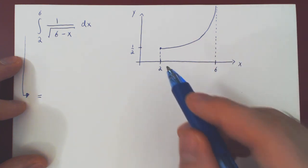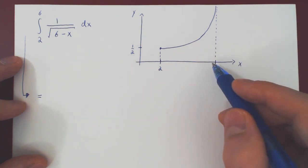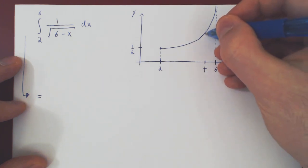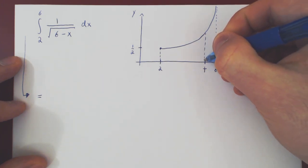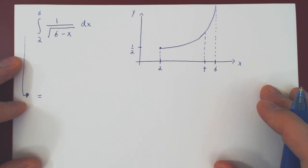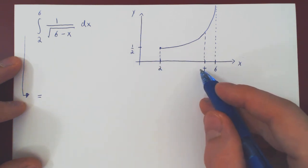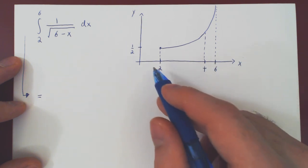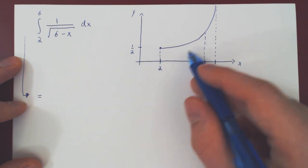The function is continuous everywhere between 2 and 6 except exactly at 6. So what if we, instead of going from 2 to 6, went from 2 to a value close to 6? Suppose we pick that point to be t. Then from 2 to t, for any t that is less than 6 and bigger than 2, the function now is continuous.